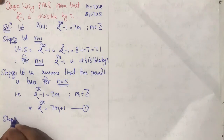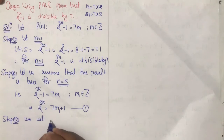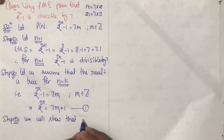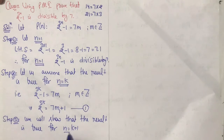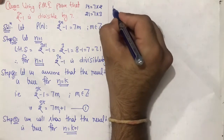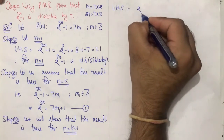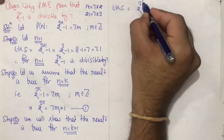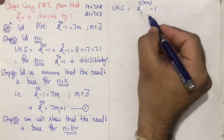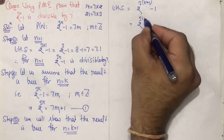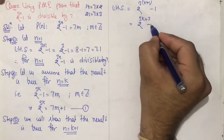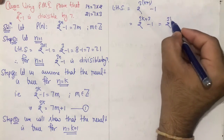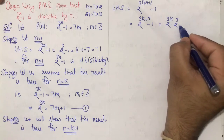Step 3: We will show that the result is true for n equal to k plus 1. So left hand side लें, उसमें n को replace करिये k plus 1 से: 2 raised to power 3 into (k plus 1) minus 1, which is equal to 2 raised to power (3k plus 3) minus 1, which is equal to 2 raised to power 3k into 2 raised to power 3 minus 1.